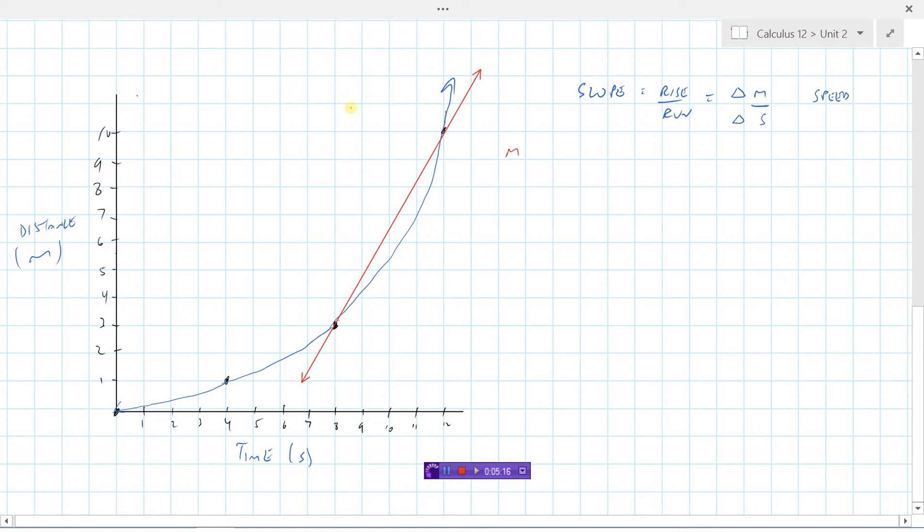Now let's find the slope of this secant line. We use M for slope. We can always find slope by going rise over run. Now we need to figure out what these points are. This has an x value of 12 and a y value of 10. This point here has an x value of 8 and a y value of 3. So rise over run. Remember we can find the rise by subtracting the two y values and we can find the run by subtracting the two x values.